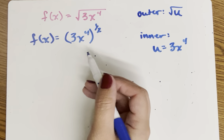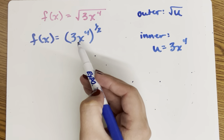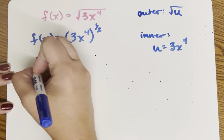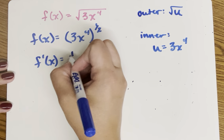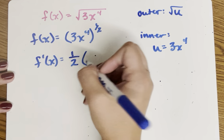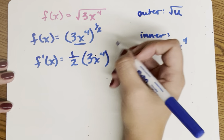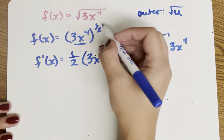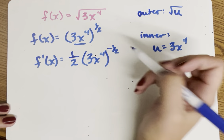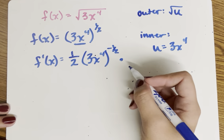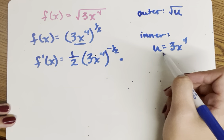When I do the chain rule, I'm going to apply the power rule and keep the inside exactly the same. So f prime of x: one half comes down to the front, I still have the same exact thing inside the parentheses — 3x to the fourth — now to the negative one half, because one half minus one is negative one half. And now I have to multiply by the inner function's derivative, or what u prime would be.